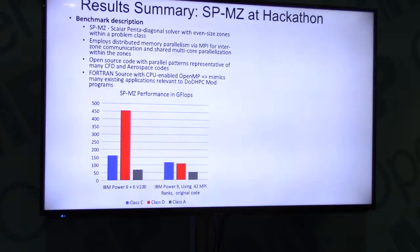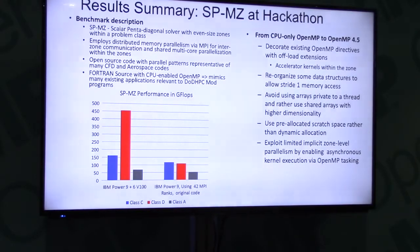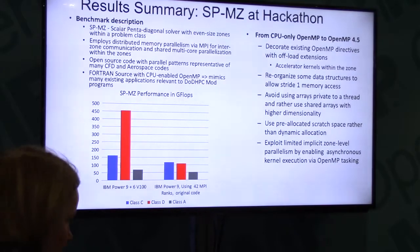Because it was a Fortran source, one of the reasons for doing this was to pressure vendors and compiler writers to continue supporting Fortran. Basically, the OpenMP directives were changed to include offload extensions for accelerator kernels within the zones. We also did some reorganization of the data structure and memory management on the GPU, since data transfer to the GPU is always hard. We also exploited various kinds of zone-level parallelism and introduced some asynchrony in the GPU programming.